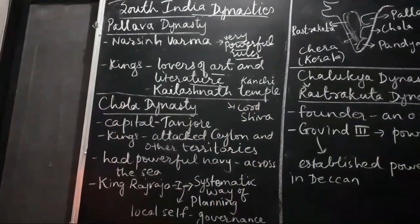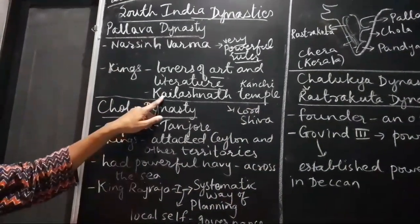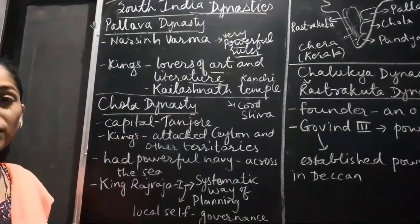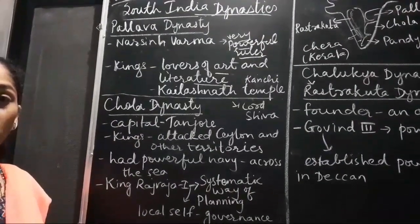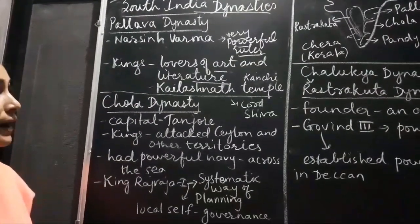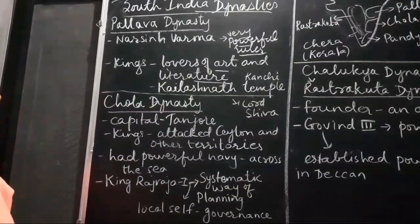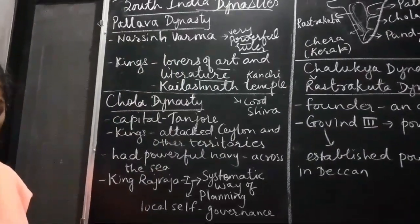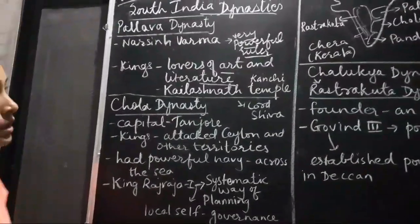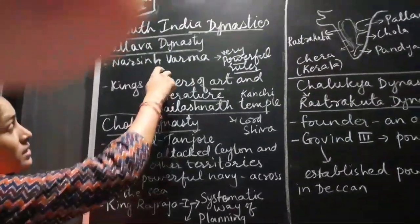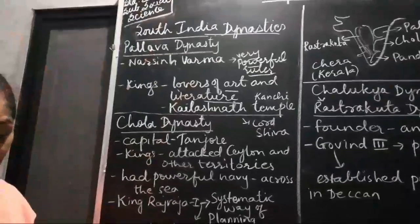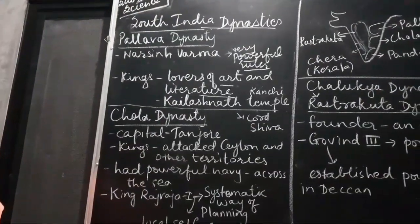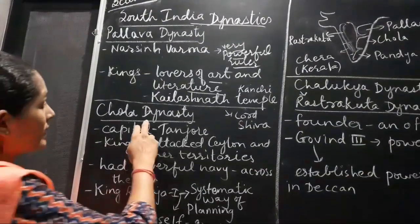We can find that they were also interested in architecture. Very ancient monuments you will find in South India which were made by different dynasties. This dynasty had a fight with Pulkeshi II.